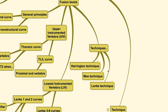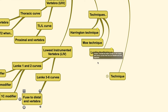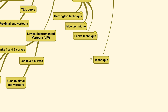For other Lenke curves, fusion is usually carried to the distal neutral vertebra. There are three commonly known fusion techniques: the Harrington technique, which fuses one level above and two levels below the neutral vertebra if within the stable zone; the Moe technique, which fuses to the neutral vertebra; and the Lenke technique, which includes all major curves and any non-structural curves that are inflexible or kyphotic.